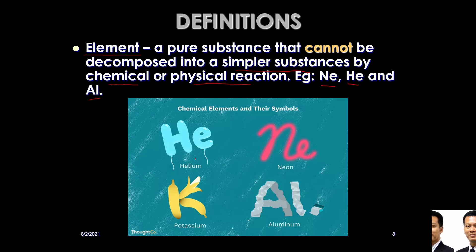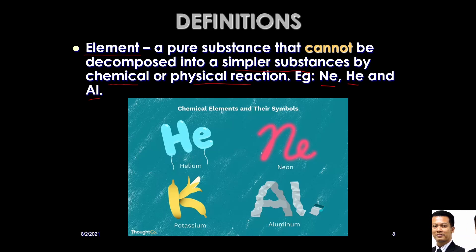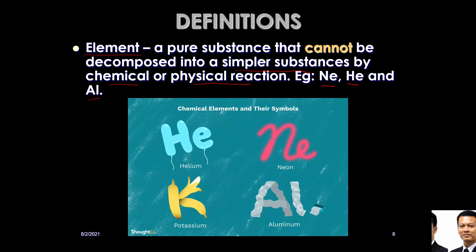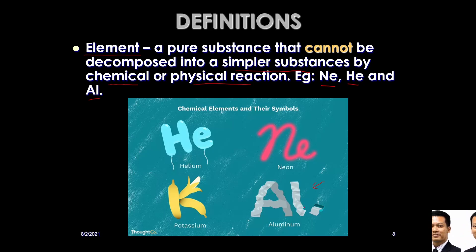Helium is used for floating balloons, as you can see here. Neon, as you can see, is used in neon lights which give very bright colors. Potassium is found in bananas — that's why its symbol is K. Aluminium, shown here, looks like aluminium sheets used as wrapping.